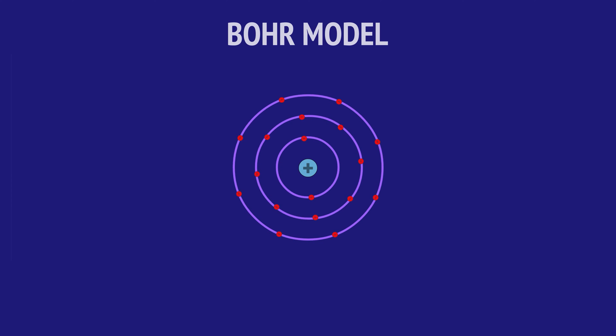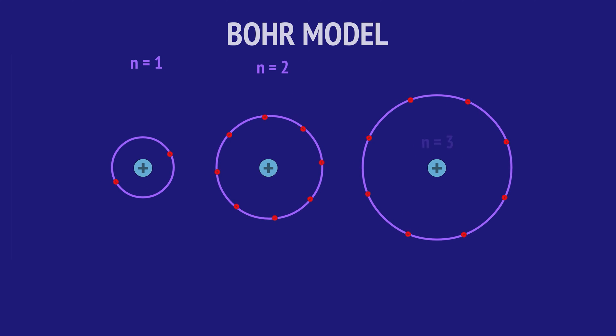he proposed that electrons could only exist at fixed orbits, like planets orbiting the sun, with electron energy increasing with the increasing radius of the orbit.